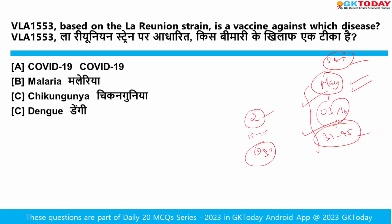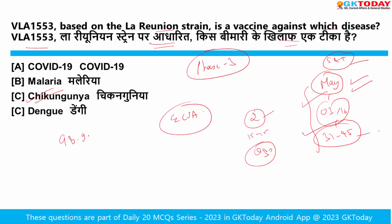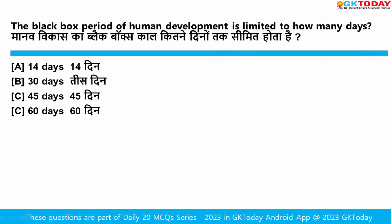VLA-1553, based on the LAR reunion strain, is a vaccine against which disease? The answer is Chikungunya — specifically the East-South-African genotype. Today's news is that the phase 3 clinical trial has demonstrated that VLA-1553 provides high-level protection against Chikungunya, with a response rate of 98.9%.